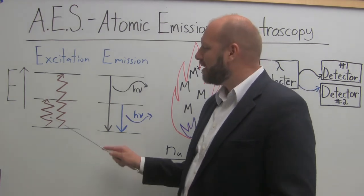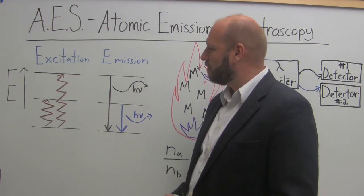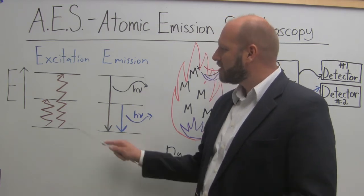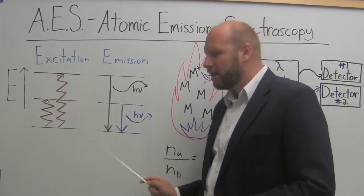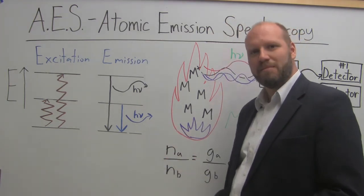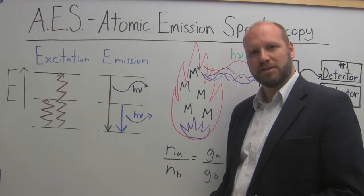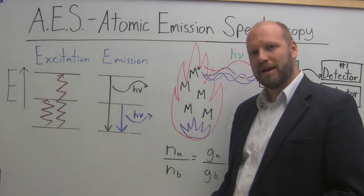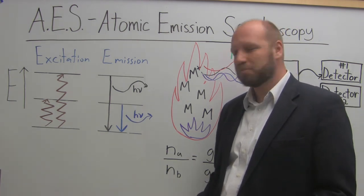But unlike Atomic Absorption where we're shining light and looking at how much it was absorbed by different atoms, we're exciting them thermally and then looking at emission. We're going to look at the wavelength of light that are emitted by different metals in our sample and use that wavelength of light to relate it to the metal that was present.